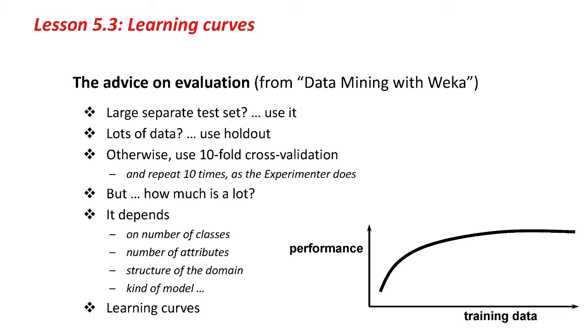It depends on the structure of the domain. Are you looking for complicated decision boundaries? It depends on the kind of model, the sort of decision boundaries it makes. If you've got a machine learning technique that looks for linear decision boundaries, then they're pretty simple. You might not need so much data as you would for ones that look for more convoluted boundaries, or for decision trees.